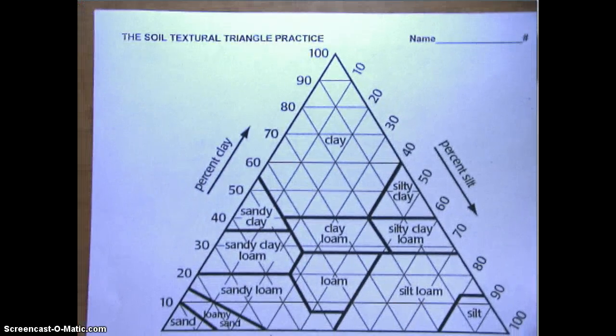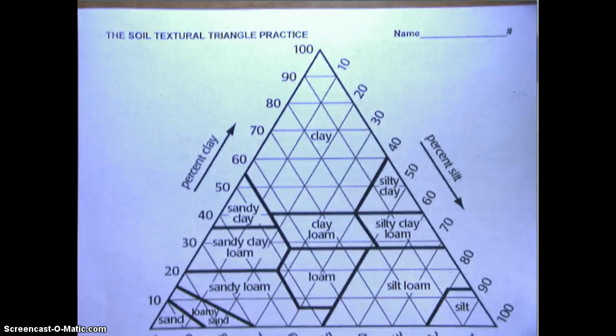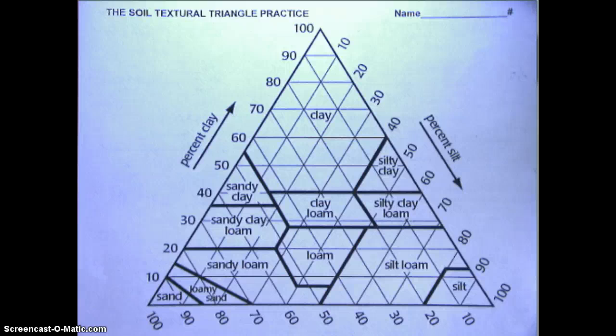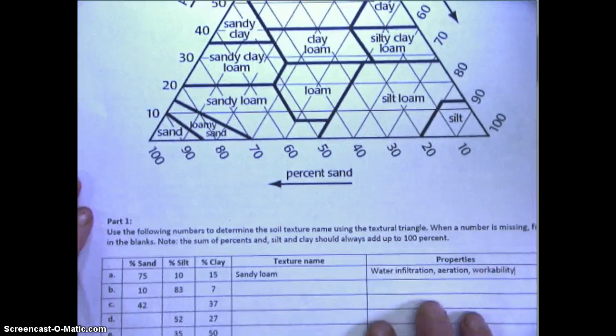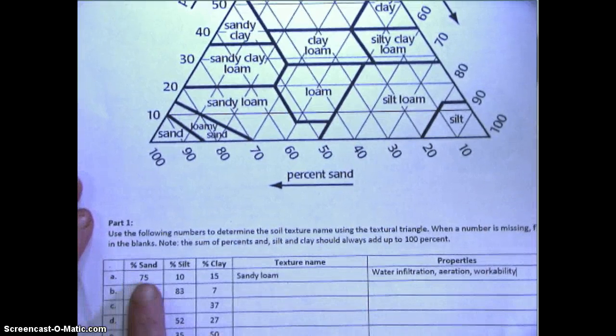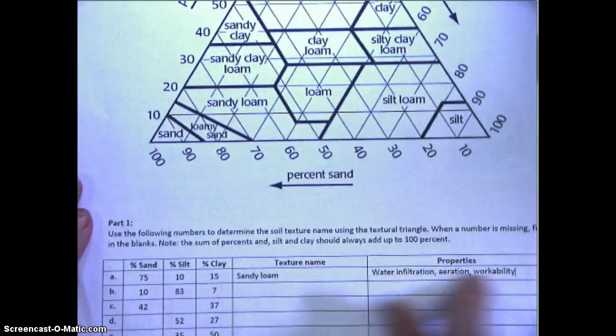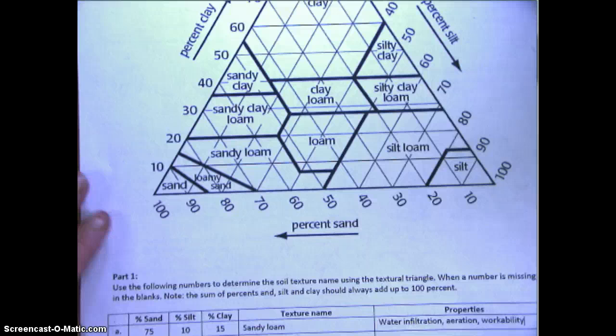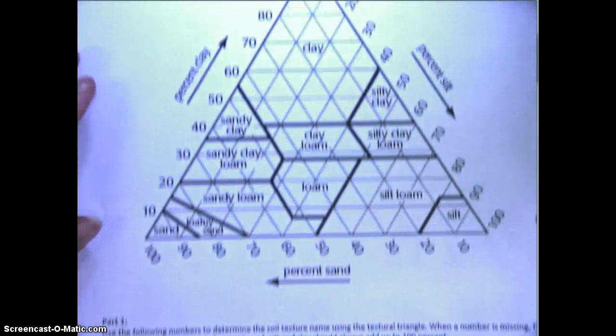In this video we're going to learn how to use a soil texture diagram or soil triangle to determine the amount of sand, silt, and clay in a soil sample. At the bottom of this sheet we have a table with the percent of each sand, silt, and clay, the texture name, and the properties of that clay which are dependent on the different types of minerals that it has.